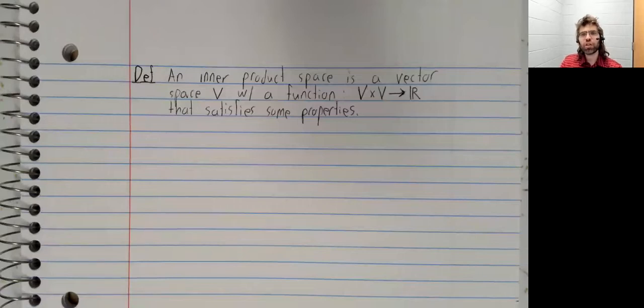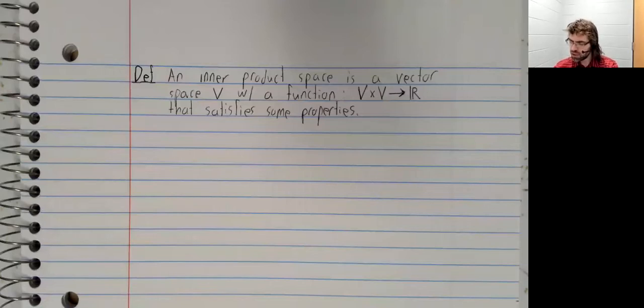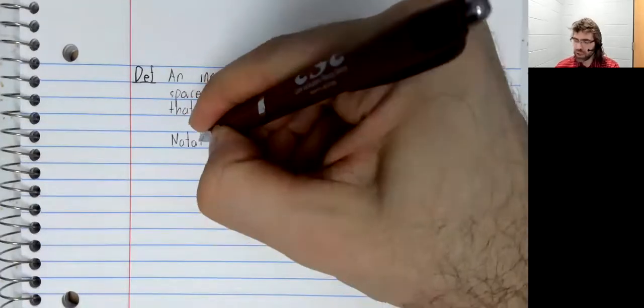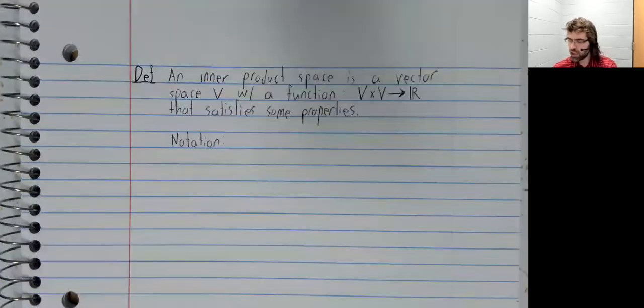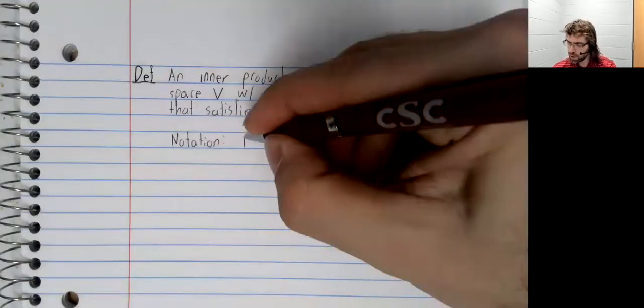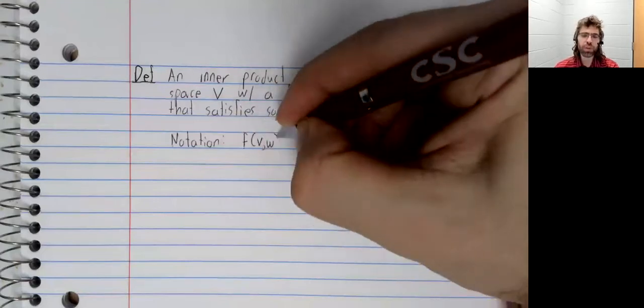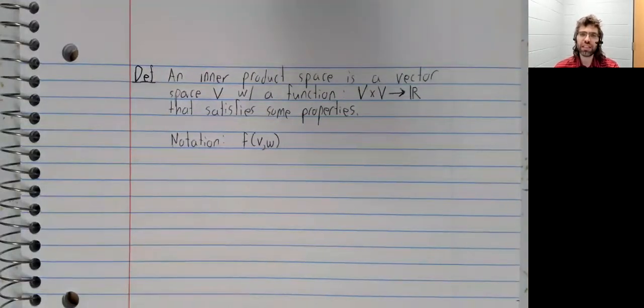Before I state those properties, let's give a little notation. The standard notation for a function like this would be something like that. This is the function we use in calculus two, calculus three, for example.